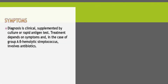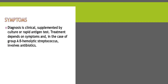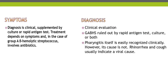Diagnosis is clinical and is supplemented by culture or rapid antigen testing. Treatment depends on symptoms, and in the case of Group A beta-hemolytic streptococcus it involves antibiotics. Group A beta-hemolytic streptococcus should be ruled out by rapid antigen test and culture or both. Pharyngitis itself is easily recognized clinically; however, the presence of rhinorrhea and cough usually indicates a viral cause. So if a child has signs and symptoms of tonsillopharyngitis with a runny nose and cough, it is more likely viral than bacterial.